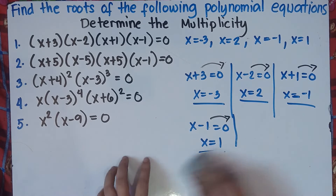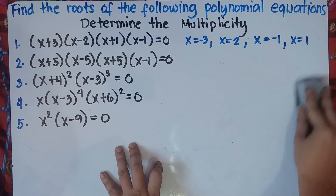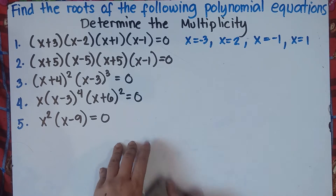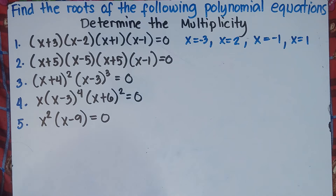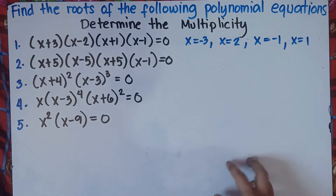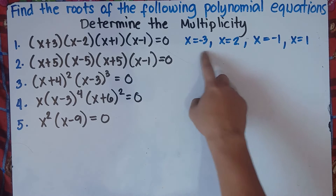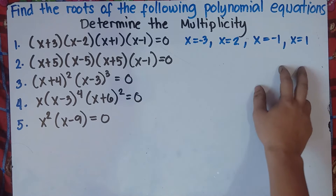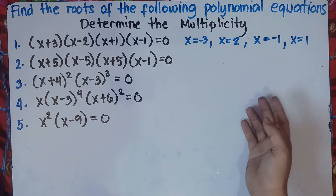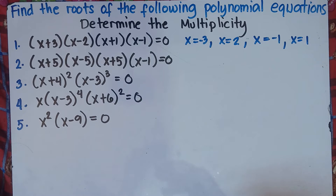For the number of multiplicity in number 1, we don't have multiplicity because we don't have any roots that are repeating. All answers are different for number 1, so there is no multiplicity.